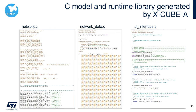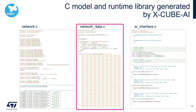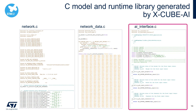These are examples of optimized C code generated by XCubeAI. The network files contain the description of the neural network topology. The network data files contain the weights and biases of the neural network. And the AI interface files provide an abstraction interface to the neural network API.